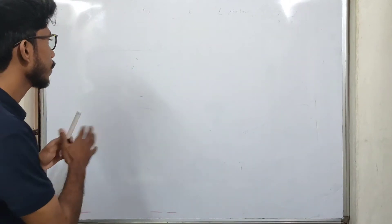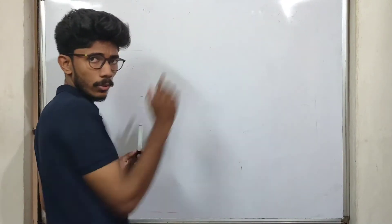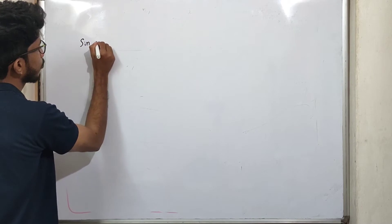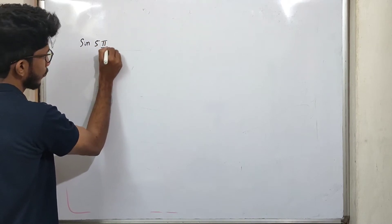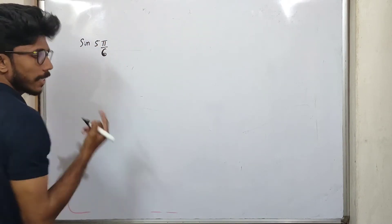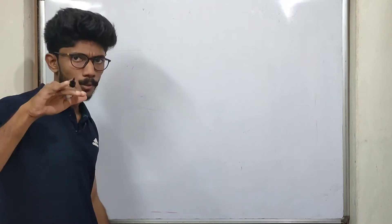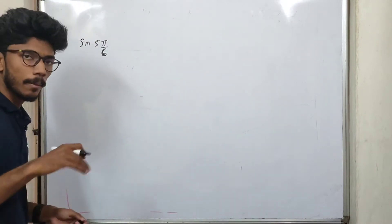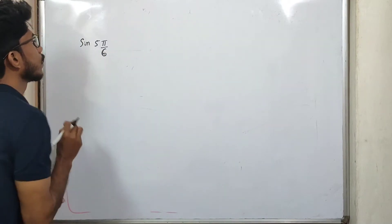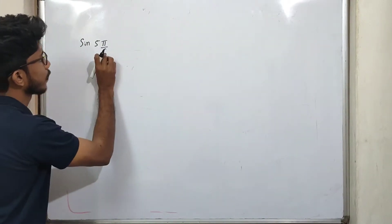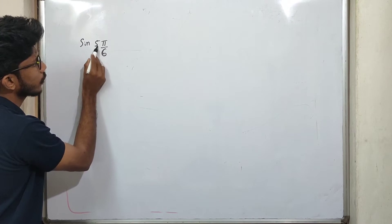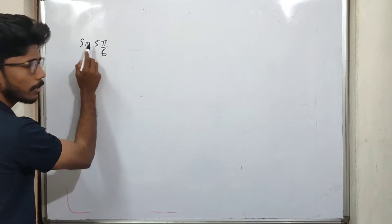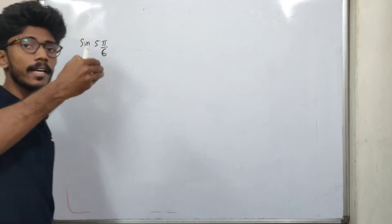First of all, let's talk about the values. Let's talk about the value of 5π/6. We can multiply the values by 5 by 6. You can find the difference between the values and denominators.